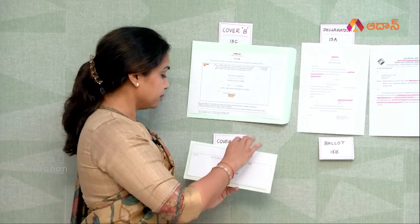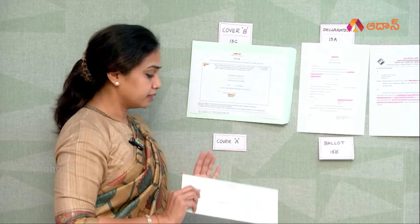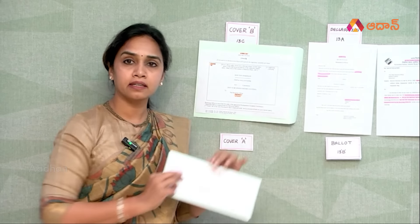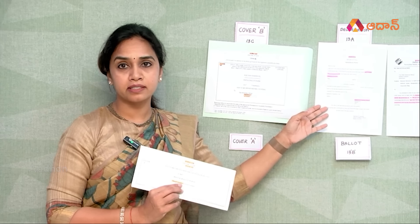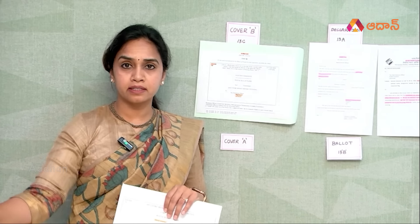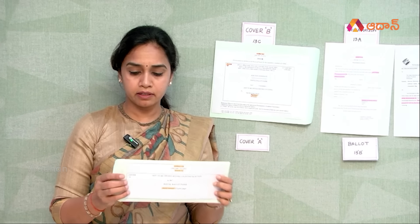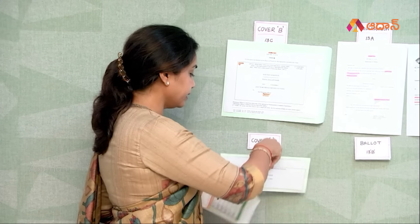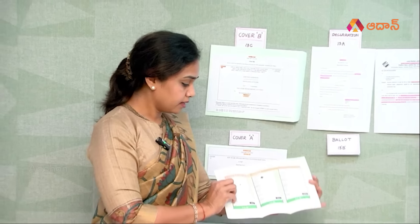Now we have to use the serial number. We can use the declaration form. I am going to seal this cover in a bag. You can maintain the secret ballot. I am going to seal this cover.